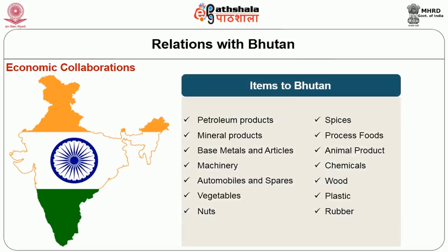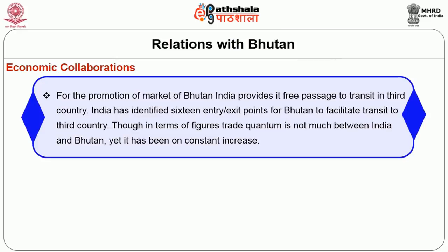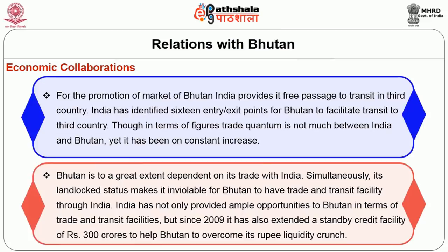India exports to Bhutan include petroleum products, mineral products, base metals and articles, machinery, automobiles and spares, vegetables, nuts, spices, processed foods, animal products, chemicals, wood, plastic, rubber, etc. For the promotion of Bhutan's market, India provides free passage for transit to third countries, having identified 16 entry-exit points for Bhutan. Though the trade quantum is not much in figures, it has been on constant increase, and Bhutan is to a great extent dependent on its trade with India.